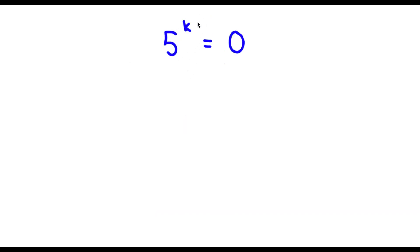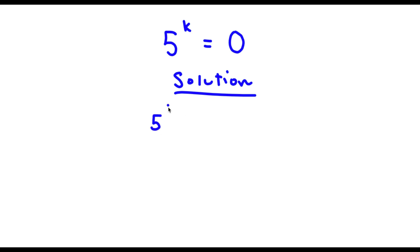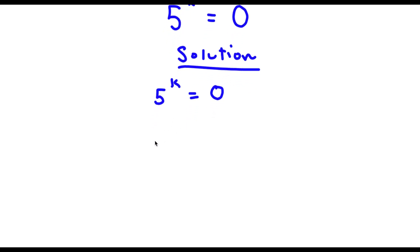Alright, so I have 5 to the power of k is equal to 0. For the solution, we start with 5 to the power of k equals 0, then take the log on both sides. So now I have log 5 to the power of k is equal to log 0.